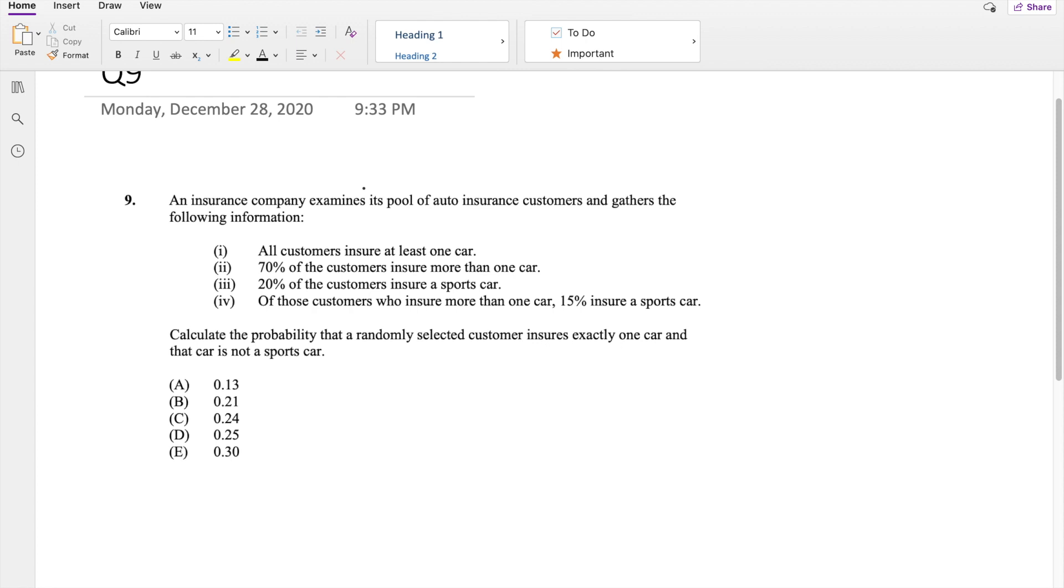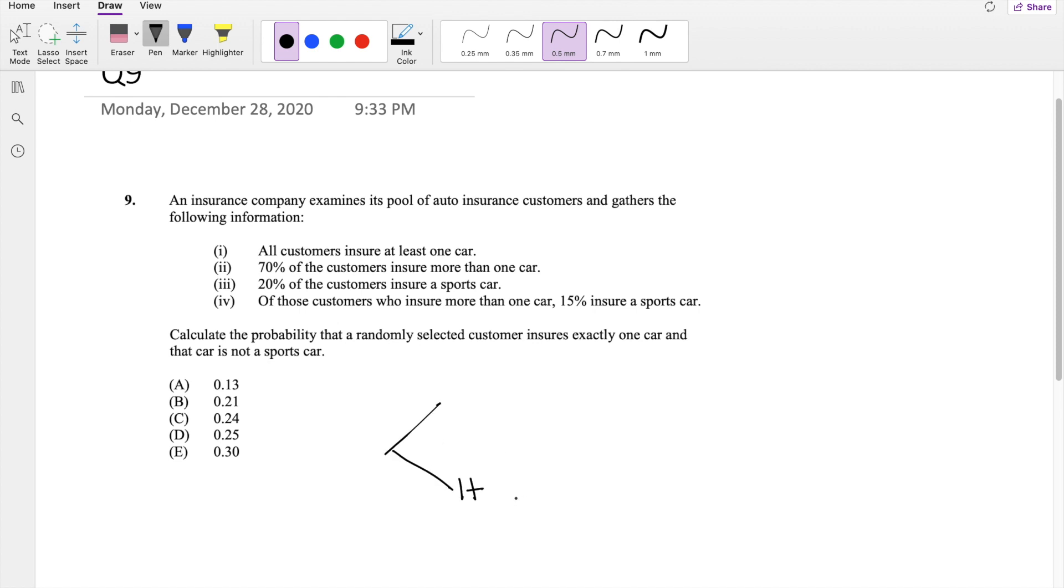Okay, as soon as you already know, let's just dive right in. So all customers insure at least one car, right? And 70% of the customers insure more than one car. It's either they insure more than one car, so one plus, with a probability of 0.7, or they insure one car with a probability of 0.3.